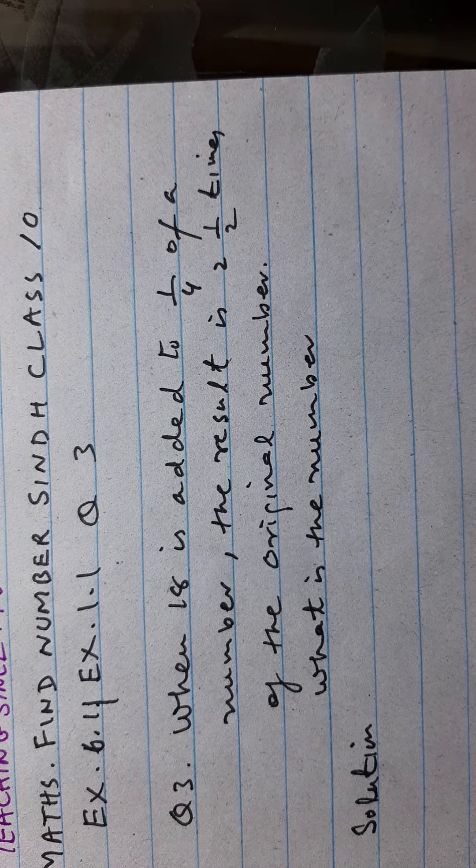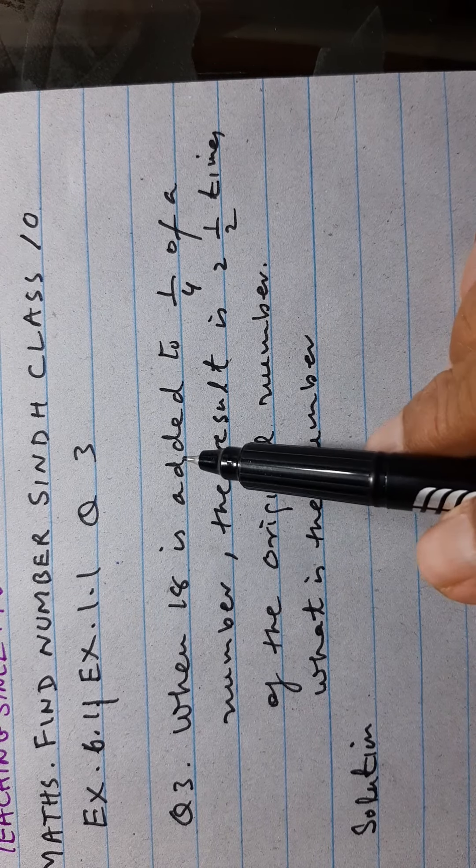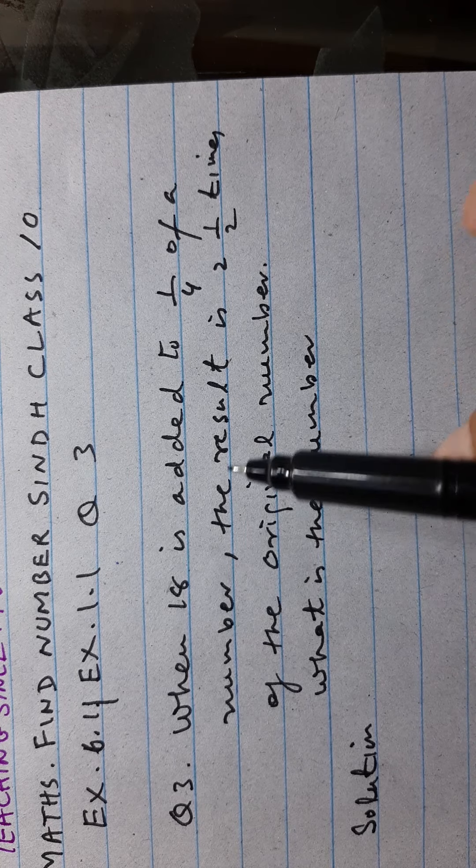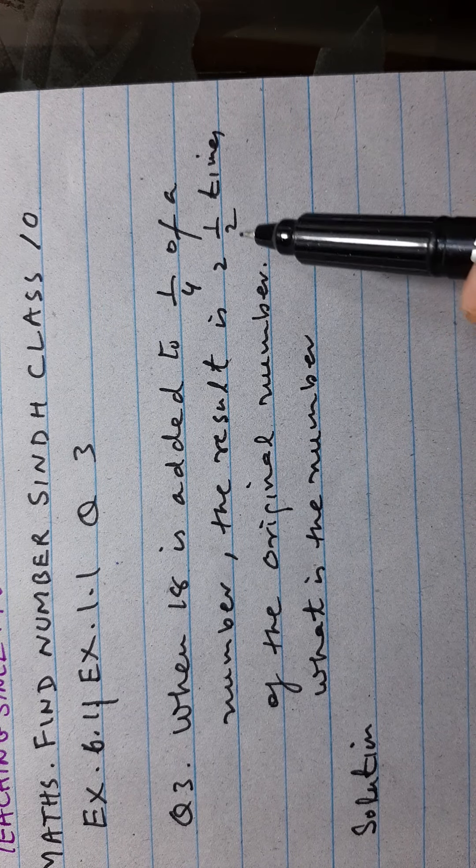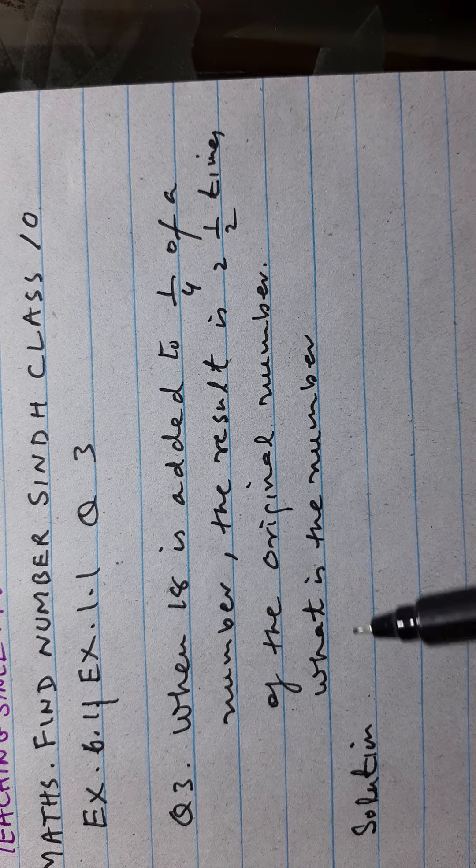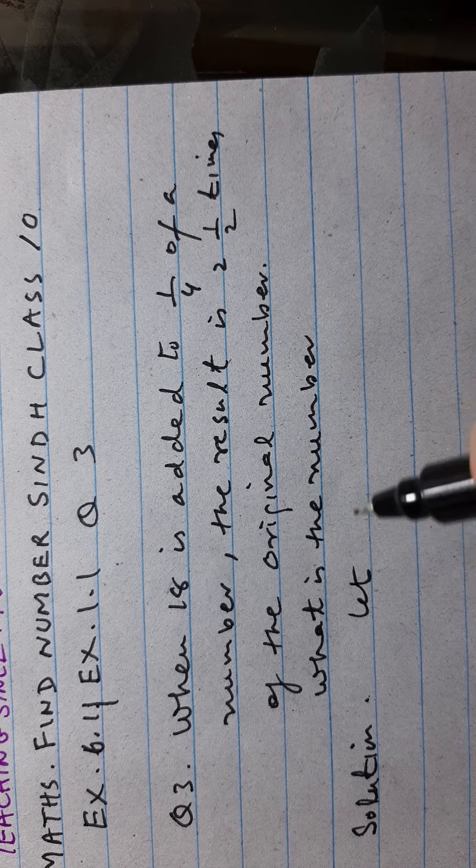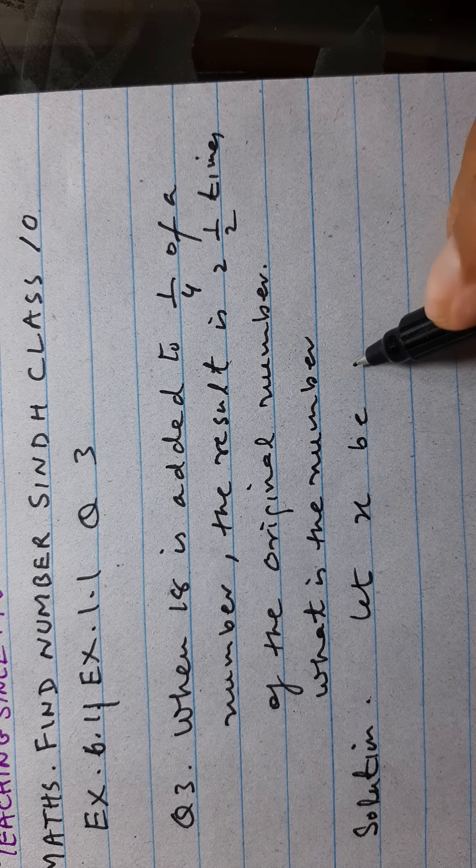Bismillahirrahmanirrahim, and this is our sum. When 18 is added to one-fourth of a number, the result is two and a half times of the original number. What is the number? Solution: let x be the number.